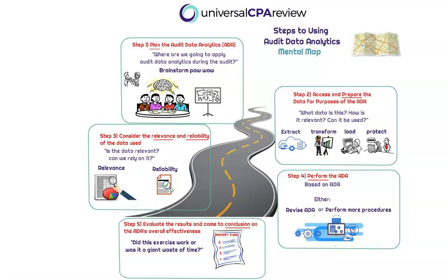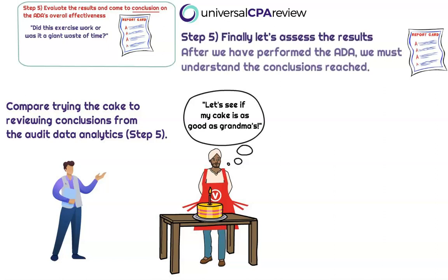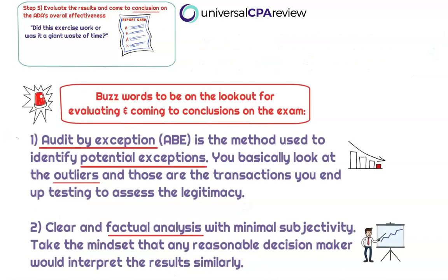We made our cake — time to eat it. This is the final step: we're now going to be reviewing all of our final results to see if that cake came out the way grandma used to make it. In the audit engagement, this is where we evaluate the results and conclude whether the purpose and specific objectives of performing the audit data analytics have been achieved. This process is known as audit by exception, sometimes called ABE. We're going to determine whether this is as factual a result as we can get, eliminating as much subjectivity as possible, while still using some professional judgment — because auditing is never completely black and white and always requires some critical thinking.